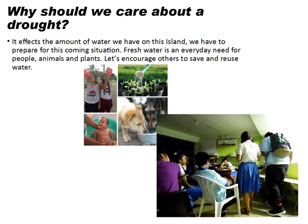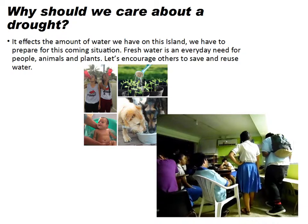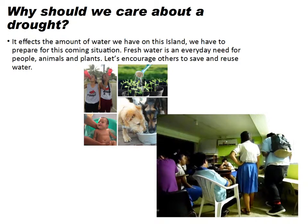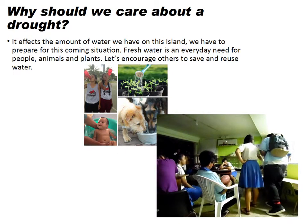Why should we care about a drought? It affects the amount of water we have on this island. We have to prepare for this coming situation. Fresh water is an everyday need for people, animals, and plants. Let's encourage others to save and reuse water.